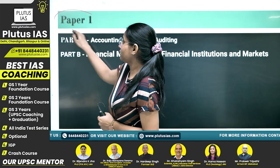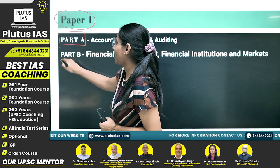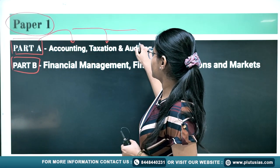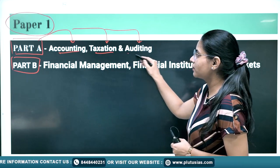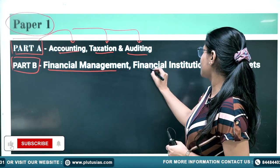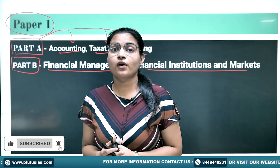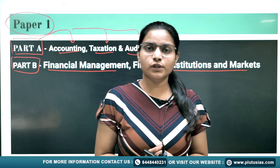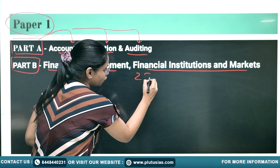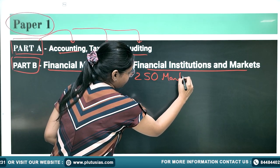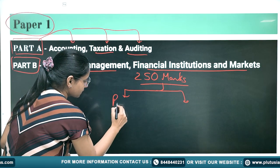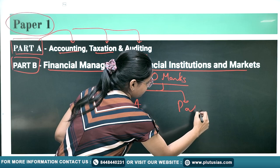In Paper One there are basically two parts. In Part A, three subjects are tested: one is Accounting, second is Taxation, and third is Auditing. Part B tests Financial Management and Financial Institutions. If you have decided to take the Commerce and Accountancy optional, you must have seen the paper — basically 250 marks per paper. Paper One is divided into two parts: Part A and Part B.